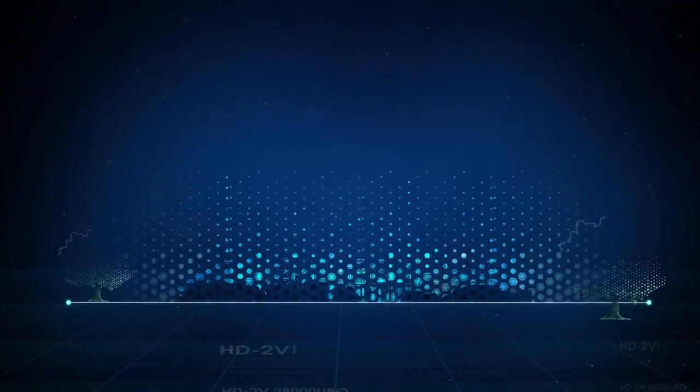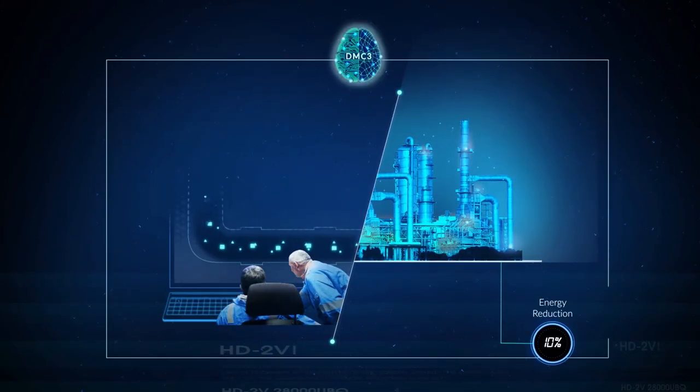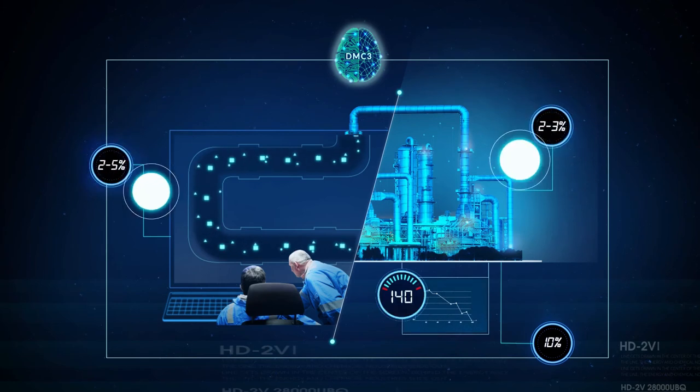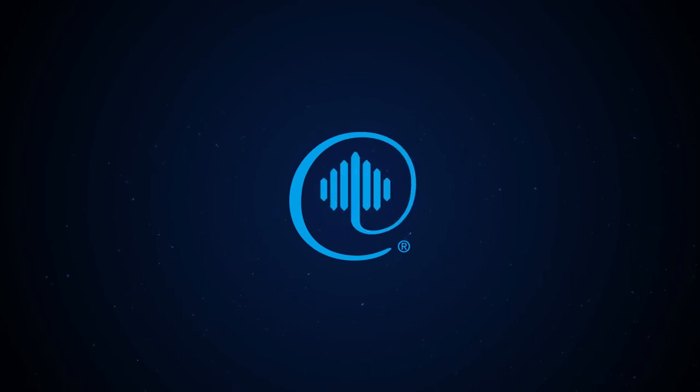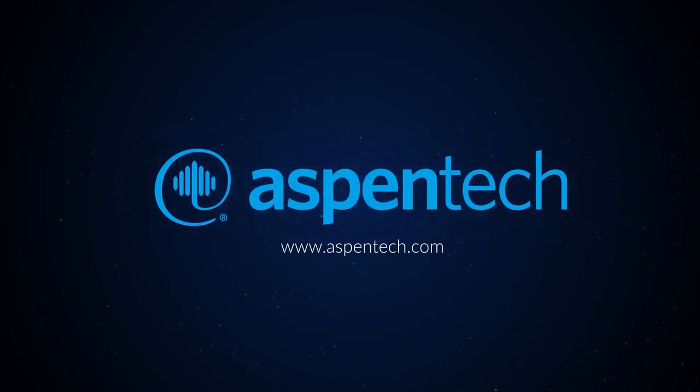Already, Aspen DMC3's adaptive technology is helping companies sustain a 10% reduction in energy consumption and CO2 emissions, 2-5% improvement in throughput, and a 2-3% increase in yield. Take the next agile step in your digitalization journey and learn more about next-generation adaptive APC technology with embedded AI. Visit Aspentech.com